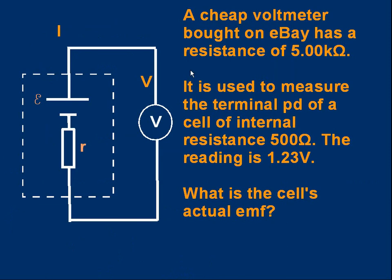A final problem. Let's suppose we buy a cheap voltmeter on ebay. Well it doesn't have to be ebay, no implication. But we've got a cheap old-fashioned voltmeter and its resistance is quite low. It's only 5 kilo ohms, 5000 ohms. And the old-fashioned voltmeters which used a moving coil and had a pointer that moved across the scale, they used to have quite low resistances. A modern voltmeter has a resistance of millions of ohms, maybe 10 mega ohms, 20 mega ohms, or more. This is an old one. It's got a low resistance. And we use it to measure the terminal PD of a cell which has an internal resistance of 500 ohms. The reading on the voltmeter is 1.23 volts. And the problem is, what is the cell's actual EMF? If you want to have a pause, you can see if you can do this yourself.